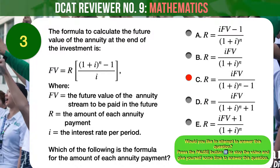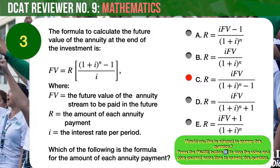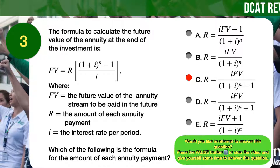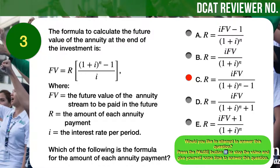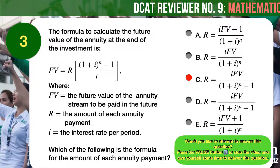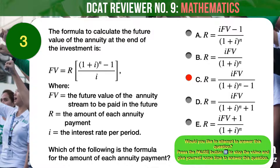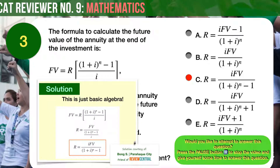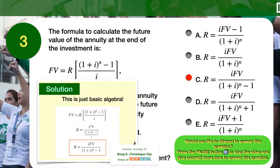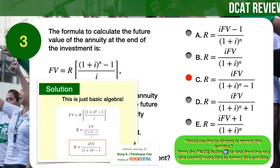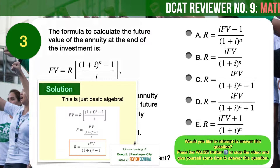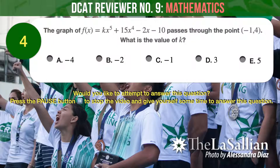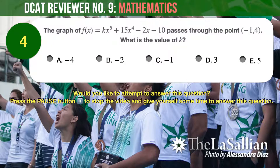The correct answer is C. The formula for the amount of each annuity payment is R equals i times Fv over the quantity 1 plus i raised to n, minus 1. Although the given formula is one used in business finance, the problem itself can be simply solved using basic algebra. With a few steps of algebraic transpositions, we can express the future value formula in terms of R to quickly arrive at the formula for the amount of each annuity payment.